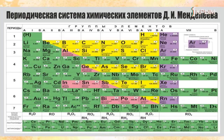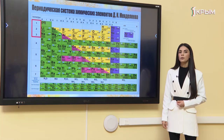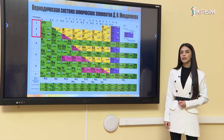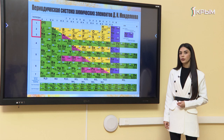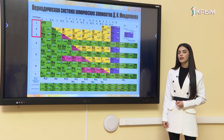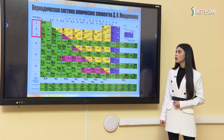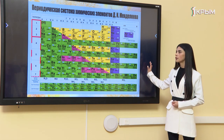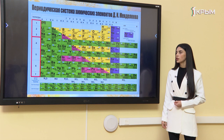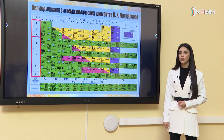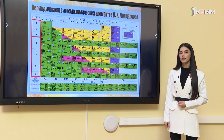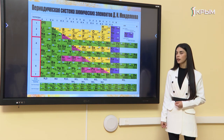Периодическая система состоит из 7 периодов, 10 рядов и 8 групп. 1-й, 2-й и 3-й периоды — малые периоды; 4-й, 5-й, 6-й и 7-й периоды — большие периоды. В 1-м периоде 2 элемента, во 2-м — 8 элементов, в 3-м — также 8 элементов.